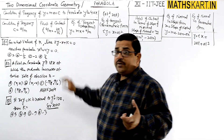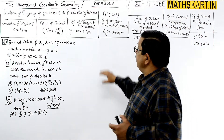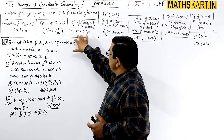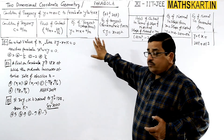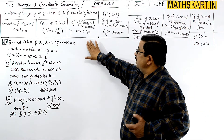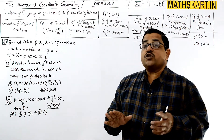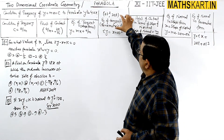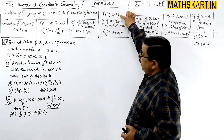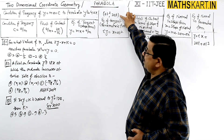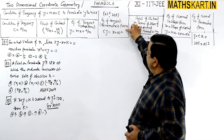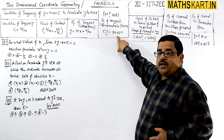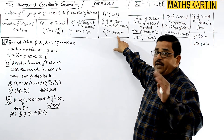The equation of tangent is y equals to mx plus a by m — this is the equation of tangent line in slope form. If the point of contact is (at², 2at) in parametric form, then the equation of tangent is ty equals to x plus at², which is the equation in parametric form.